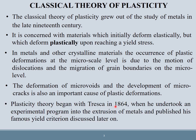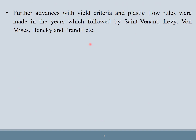Plasticity theory began with Tresca in 1864 when he undertook an experimental program into the extrusion of metals and published his famous yield criteria. Further advances with yield criteria and plastic flow rules were made by Saint-Venant, Levy, von Mises, Hencky, and Prandtl — many scientists continued working on plasticity and developed different types of theories for plastic deformation.